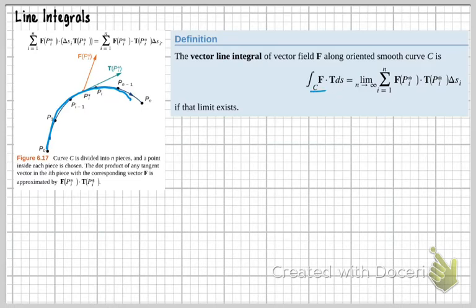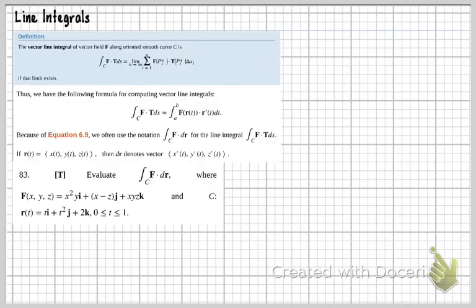Now, we don't use this f dot t ds as this limit here, but take a look at this. This vector line integral is equal to - so this f dot t ds is equal to f, when I plug in my r(t) into the vector field variables, dotted with r prime t dt. That's how we actually use this. The concept up here is fine, but we actually use it as this integral down below.